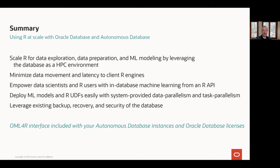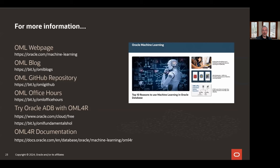By operating in the database, users benefit from database backup, recovery, and security without handling these separately in applications. The OML4R interface is included with Autonomous Database instances and Oracle Database licenses. On Oracle Database, you do need to explicitly install OML4R, supported through the Linux operating system from the client perspective. If your data is in or accessible through an Oracle Database, you can take advantage of this R-based functionality. Resources include the Oracle downloads page, the Autonomous Database free tier, and Oracle Live Labs workshops for guided tours of OML components.